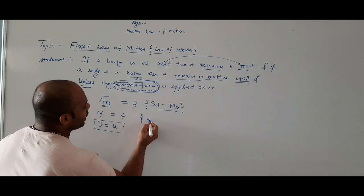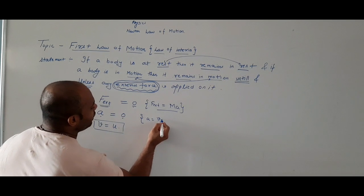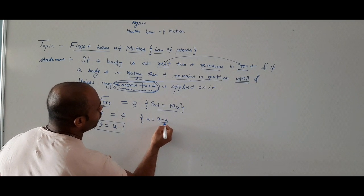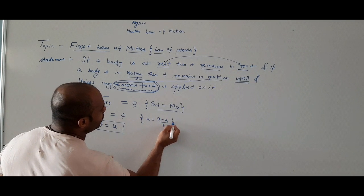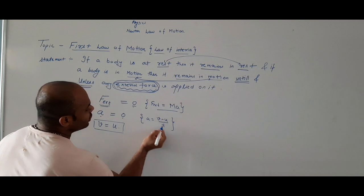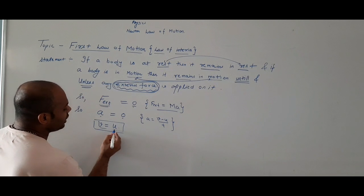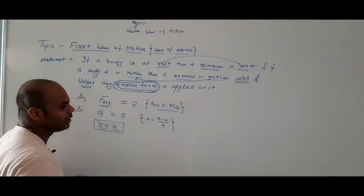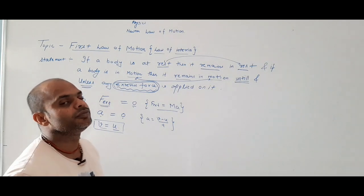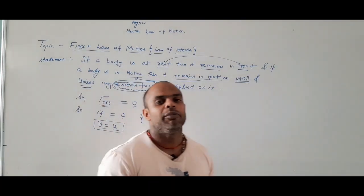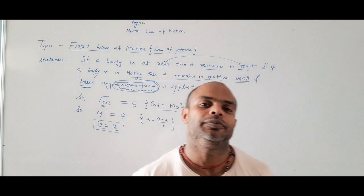Aur acceleration ka formula hota hai: (v minus u) upon t. Agar acceleration zero ho gaya, to v barabar u aa jayega. Yahi hai humara first law.